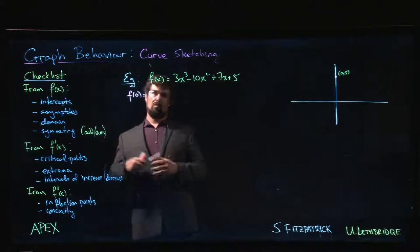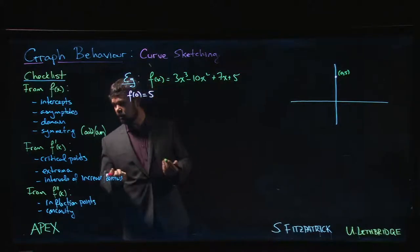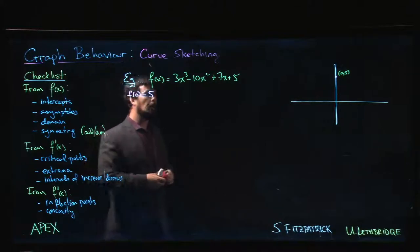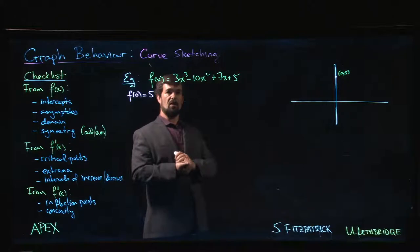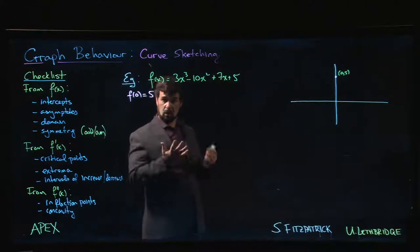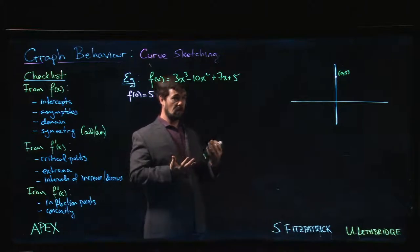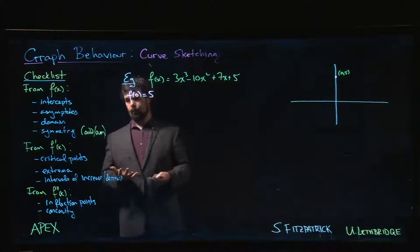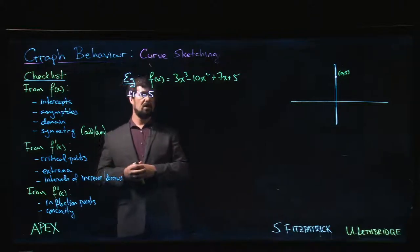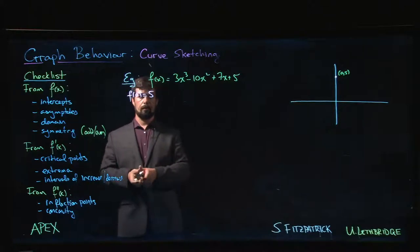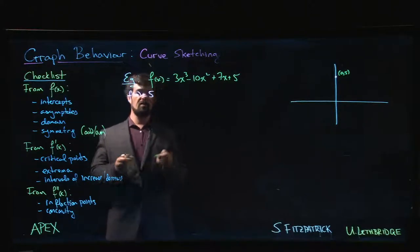For this polynomial function, there's not a lot that we can get just from the function itself. X-intercepts are difficult because you'd have to figure out how to factor a cubic, and it's quite likely that the roots aren't even rational roots, in which case you're not going to be able to find them by hand. Once you feel like you've gotten everything you can get out of the original function, we move on to the first derivative.